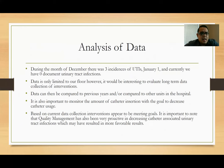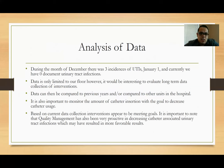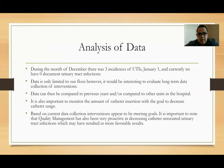Analysis of data: during the month of December there were three incidents of UTIs, and in January there was one. Currently, there are no documented urinary tract infections. Data is limited to our floor; however, it would be very interesting to evaluate long-term data from these interventions and assess whether there was a significant change within our unit. After that, it would be important to evaluate hospital-wide to see what other units are doing and whether their interventions are working to decrease the overall incidence of urinary tract infections. Monitoring the number of catheter insertions is important, but most importantly, if we are not inserting catheters unnecessarily, patients will not get catheter-associated UTIs, and this will overall decrease the rate of urinary tract infections.